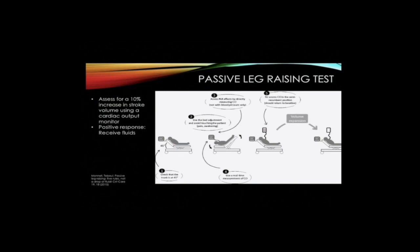In order to perform a passive leg raise, first sit the patient at 45 degrees in a semi-recumbent position. Lower the patient's upper body to horizontal and passively raise the legs to 45 degrees upwards. A maximal effect occurs at 30 to 90 seconds. Assess for a 10% increase in stroke volume using a cardiac output monitor. Those with a positive response to the passive leg raise can subsequently receive fluids.